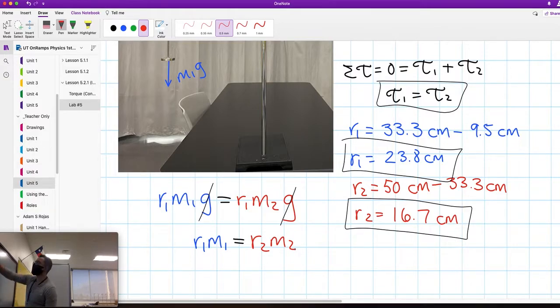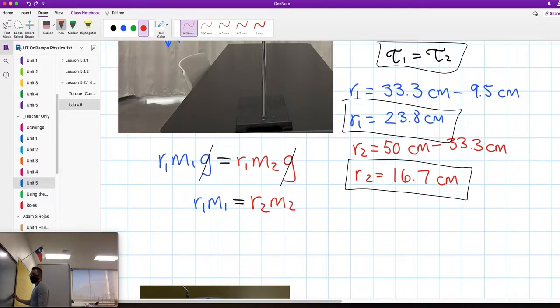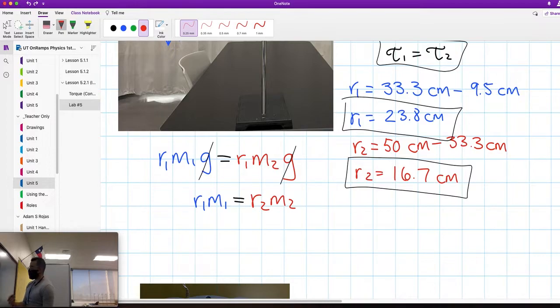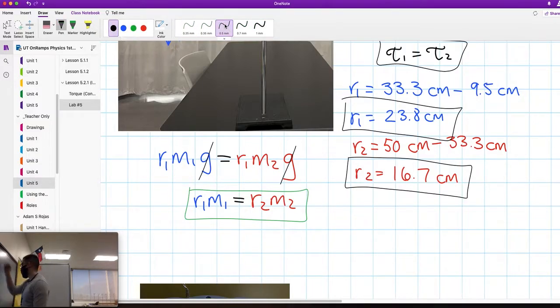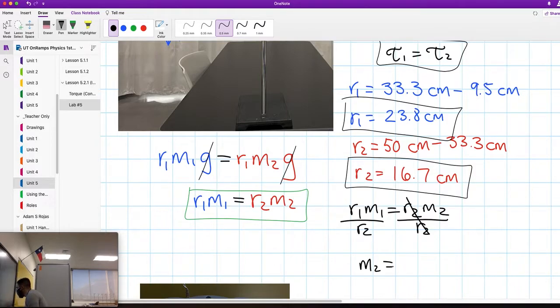We're trying to find the mass of the meter stick, that would be M2. To solve for M2, we do algebra. This will be the main equation that you're going to use for the lab. This equation will help you for part 3 as well. R1 times M1 equals R2 times M2. We divide both sides by distance 2, and then our equation for mass 2, which is the mass of the meter stick, will be M1 times R1 divided by R2.